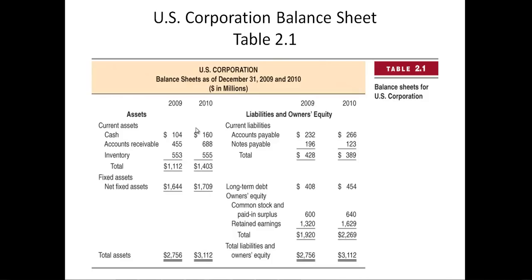The first thing about the balance sheet that we should note is it's called a balance sheet because it has to balance. Total assets in 2009 — $2,756,000,000 — has to equal the amount of total liabilities and owner's equity.